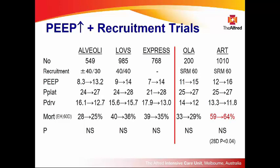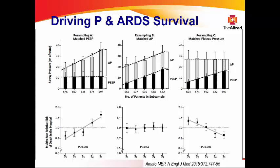Looking at ventilatory patterns across trials: all showed a PEEP increase, a slight plateau pressure increase, and reductions in driving pressure. Amato has done a large individual patient meta-analysis showing that when plateau pressure increases at constant PEEP, mortality rises. But if driving pressure is kept constant while PEEP and plateau increase, there's no change in mortality. Furthermore, if plateau pressure is kept constant and PEEP increases with reduced driving pressure, mortality comes down. He concludes the most important factor is driving pressure, not plateau pressure.